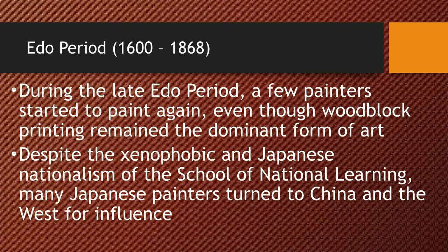Even though woodblock printing remains the dominant form of art in the Edo period — for reasons discussed in Lesson 7, it was much easier and cheaper for merchants to make a profit because you could make impressions and sell as many prints as you'd like — painting becomes popular in the late Edo period again. And despite the xenophobia and nationalism of the School of National Learning, many Japanese painters turned to China and the West for influence in their painting.